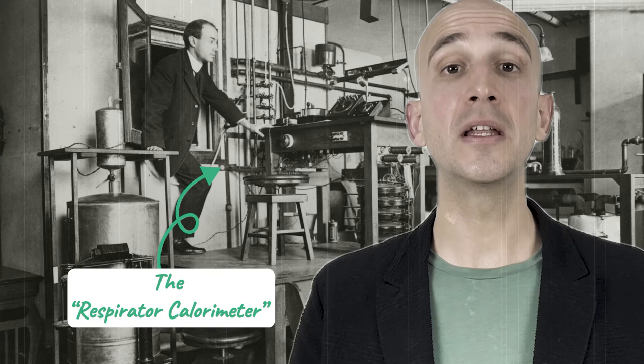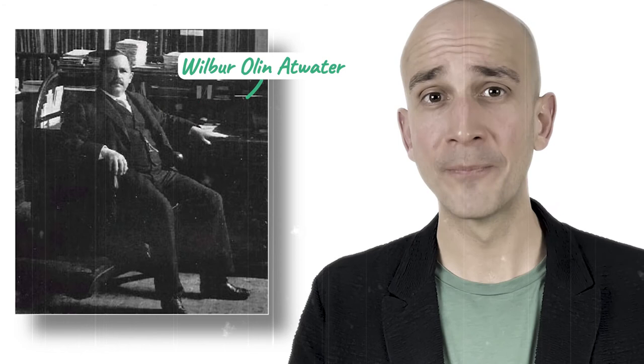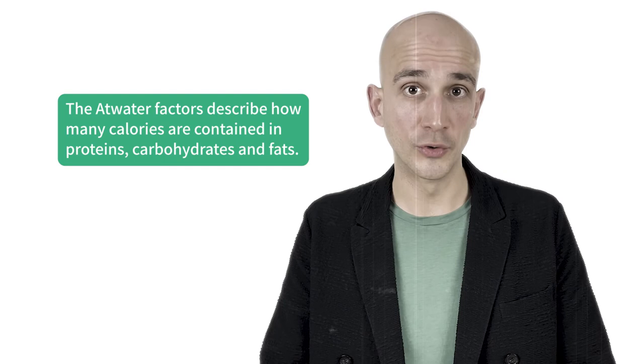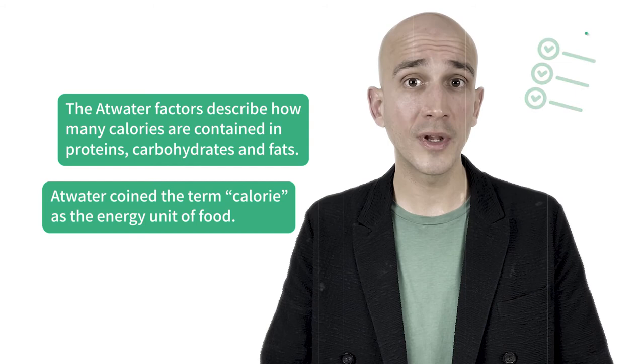Anyways, a postdoc in von Voigt's lab built another large chamber and determined the energy equivalents of the main food components. His name was Wilbur Olin Atwater, and his measurements were of such high precision that we still know them today by his name — the Atwater factors. They describe how many calories are contained in each of the macronutrients: proteins, carbohydrates and fats. He also coined the term calorie as the energy unit of food.